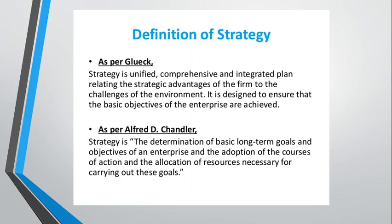Let us look at the definition of strategy as given by Duke. Strategy is a unified, comprehensive, and integrated plan relating the strategic advantage of the firm to the challenges of the environment. What does unified, comprehensive, and integrated mean? It means that every department may have its own strategy for achievement of its objectives, but at the end of the day there is goal congruence — that is, achievement of organizational goals. If every department starts working only for achievement of its own objective, there will be total disarray in the business. That is why strategy should be unified, all-comprehensive, and totally integrated for an entire business organization for achievement of advantages.